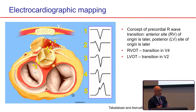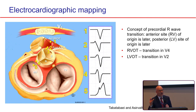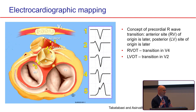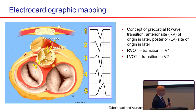Taking that concept further, we use not just V1 but the R-wave transition from positive to negative across the precordial leads. For an RV outflow tract PVC or VT, the transition from left bundle branch block to positive forces would occur very late—around V4—because it's a very anterior site. For the LV outflow tract, the transition would occur earlier, usually as early as V2. There is some variation in how 'transition' is defined, which can muddy the concept.